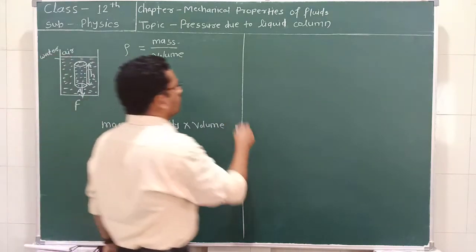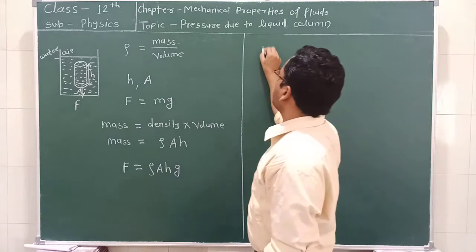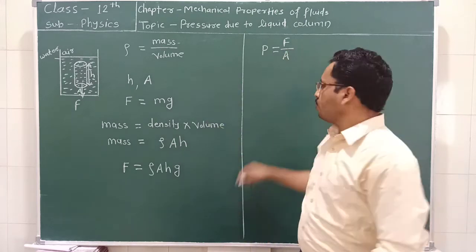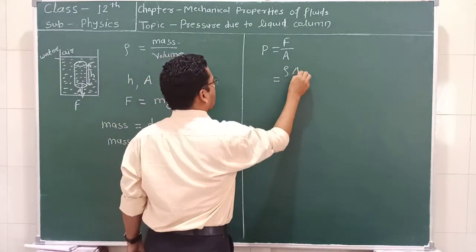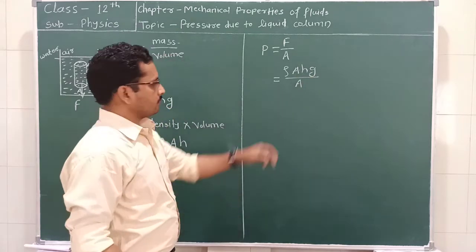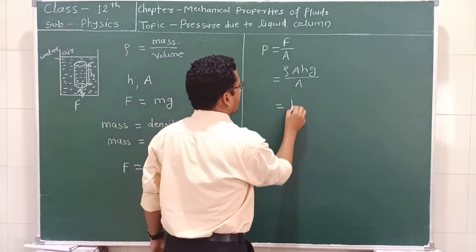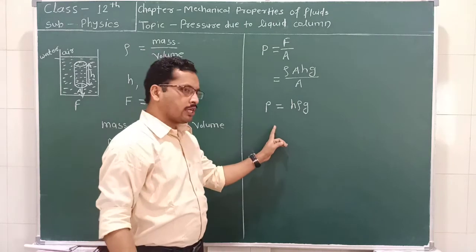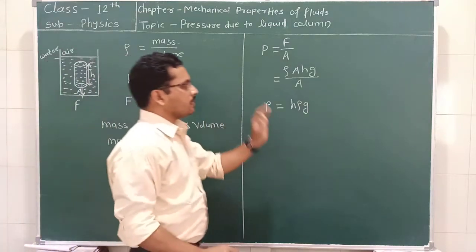Now we know from the last lecture that pressure is equal to force per unit area. So P equals F divided by A, which gives rho times A times H times g divided by A. The A cancels, and therefore P is equal to H rho g. This is the pressure acting on the liquid when it is placed inside the container.